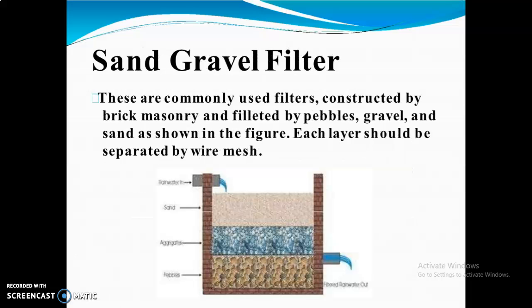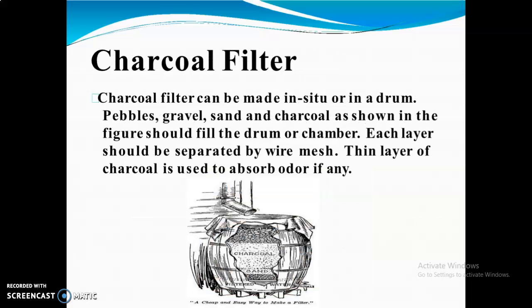The first filter type is the sand gravel filter. As seen in this picture, it has three layers of sand, gravels, and pebbles. This is a commonly used filter, constructed by brick masonry and filtered by pebbles, gravels, and sand as shown in the figure — each layer separated by wire mesh. The second is the charcoal filter. It can be made in situ or in a drum, filled with pebbles, gravels, sand, and charcoal as shown — each layer separated by wire mesh. As seen in this picture, this is the charcoal, sand, and wire mesh separating these layers.